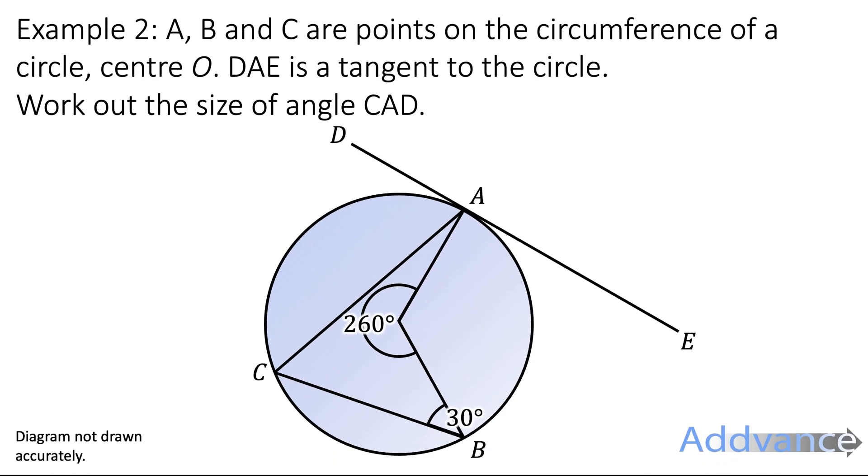Let's try one more example here. A, B and C are points on the circumference of a circle with centre O. DAE is a tangent to the circle. Work out the size of angle CAD.